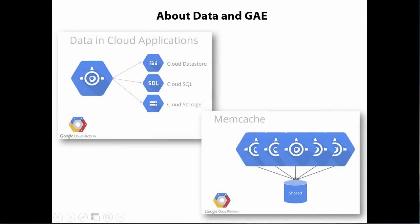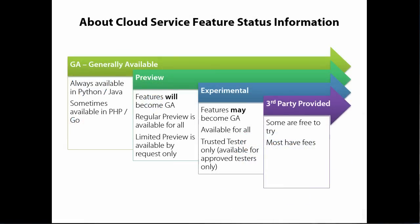One of the things particularly interesting to me about all cloud implementations is how data is handled, since I do a lot in big data. One of the aspects of maturity I've seen with the Google Cloud over the past year is the maturity around the data offering. With Google App Engine, you basically have four different choices for data. Because Google's cloud is evolving, I want to explain the Google terminology for beta because I think it is important.